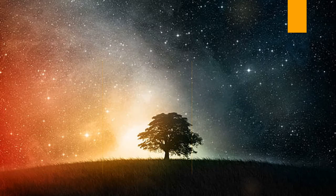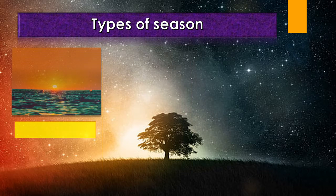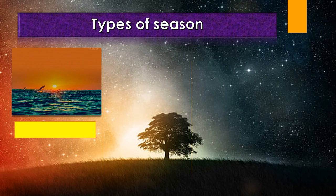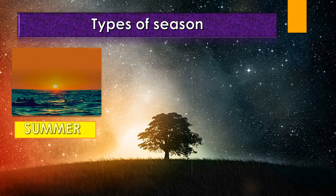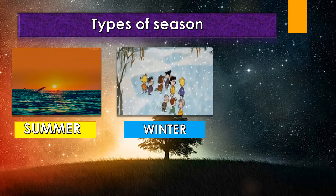Now children, let us learn about the types of seasons. There are three types of seasons: summer, winter, and monsoon.